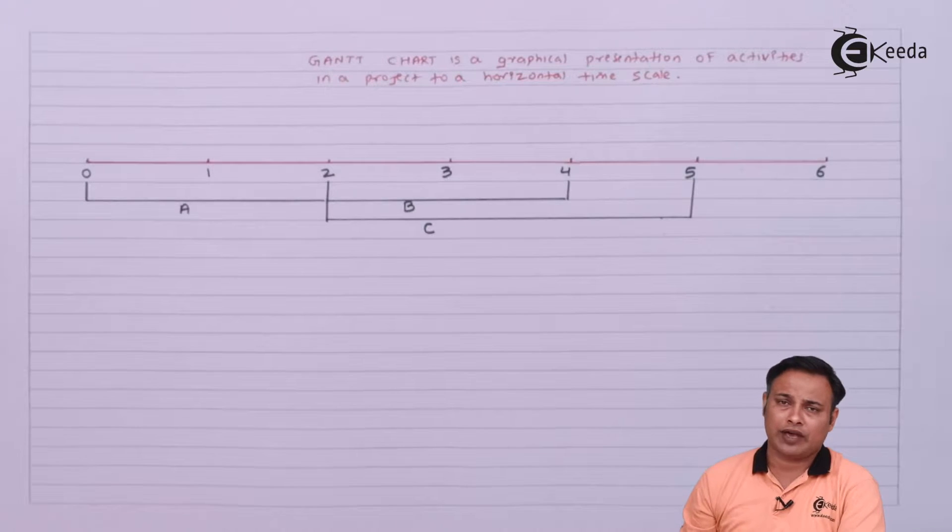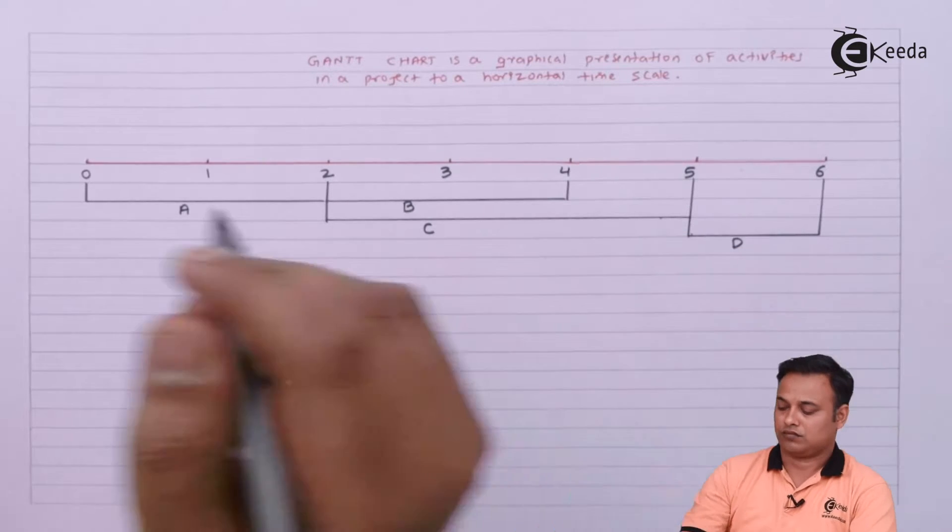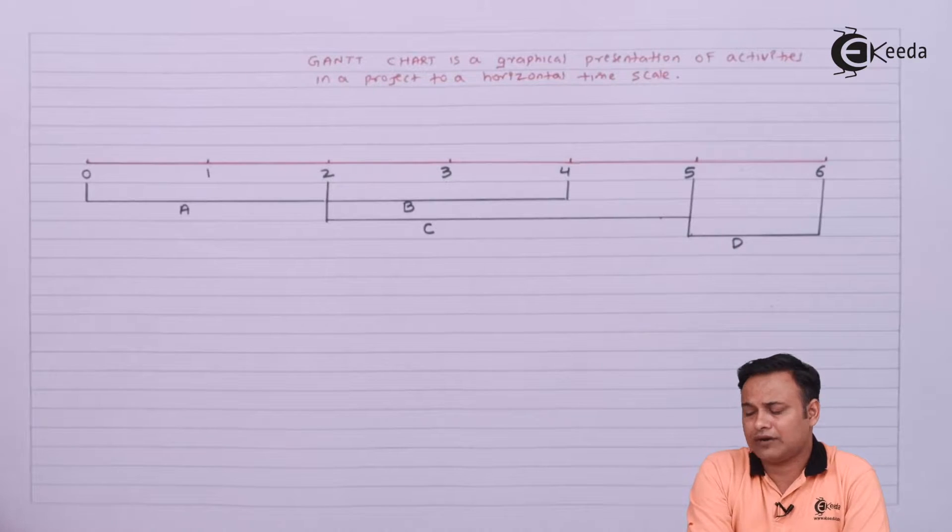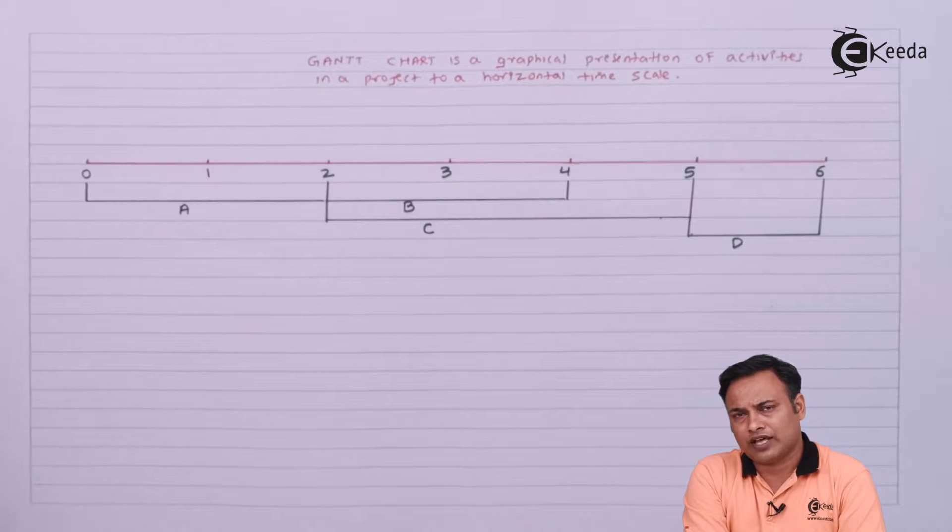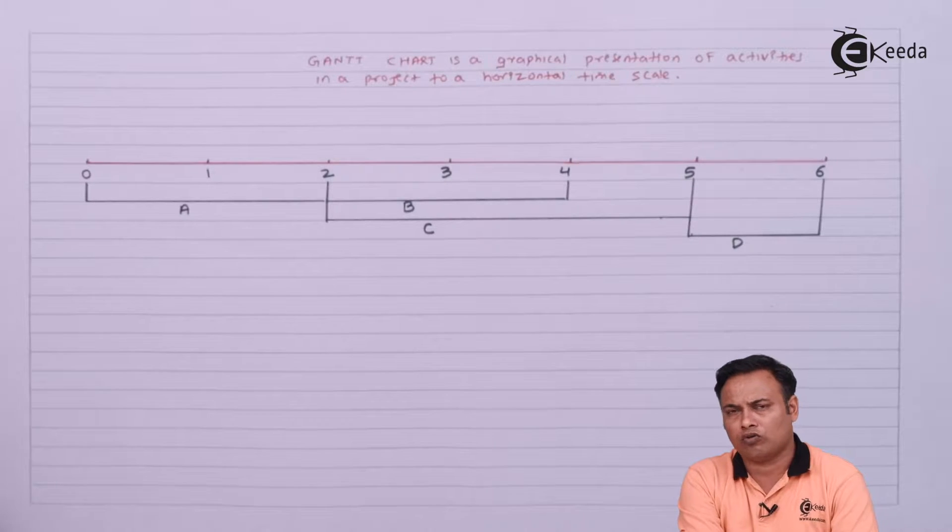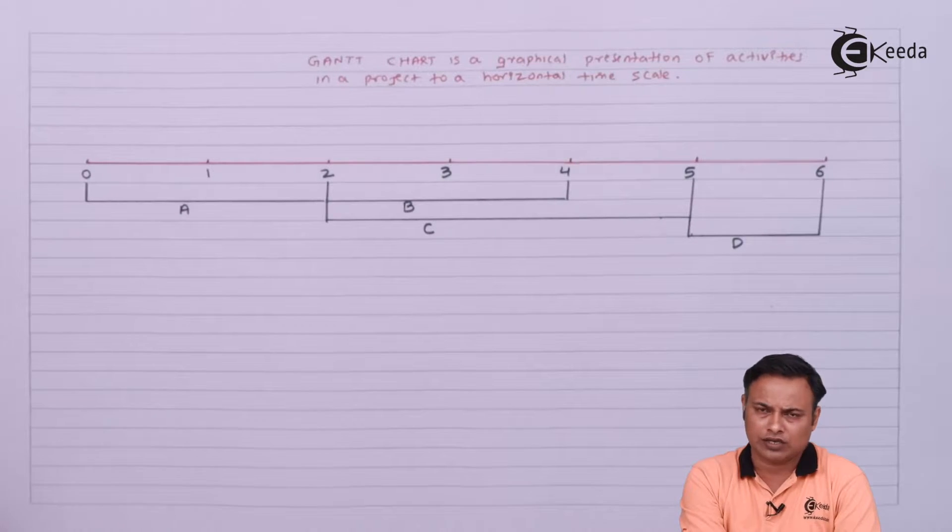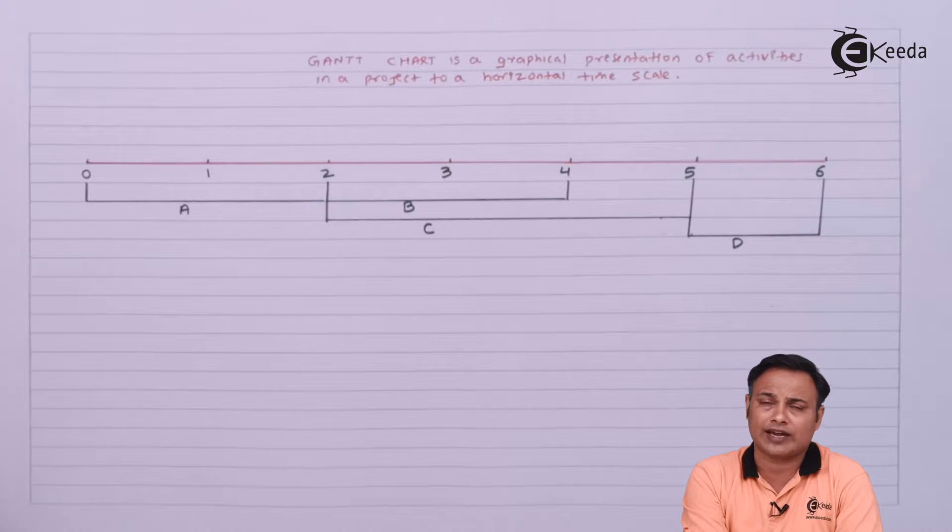Activity C takes three days - second, third, and fourth day. And at last we have activity D. Here what I have done is shown the overall sequence of the activities, the duration of time they will take, and how the activities flow in the project.